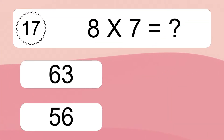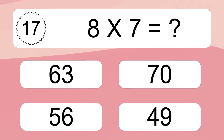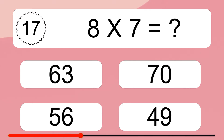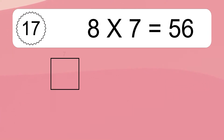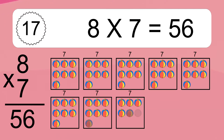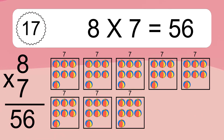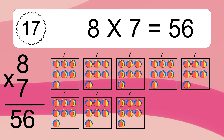8 times 7 equals 56. We have 8 boxes and each box has 7 colorful balls inside. If you count all the balls in all the boxes together, you will have 8 times 7 balls. This equals 56 balls.